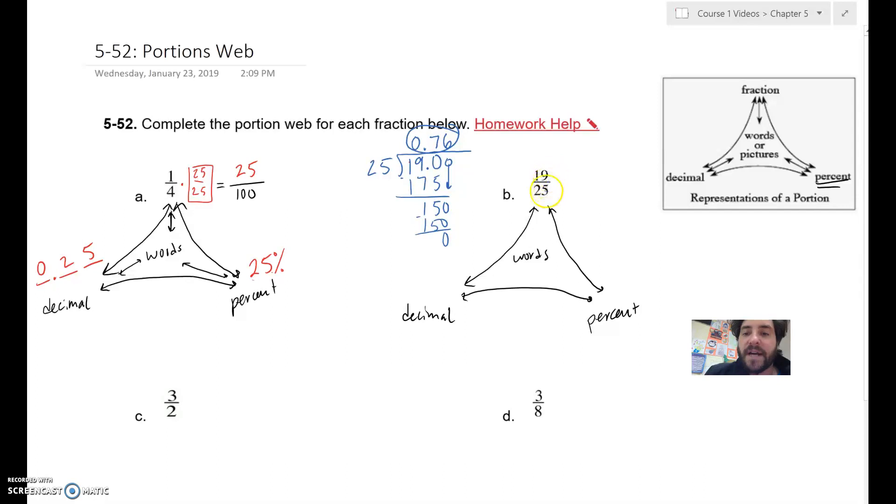That's our decimal right there. So compare that, that doing 19 divided by 25 gets us our decimal of 0.76. And how you would say that is 76 hundredths. So this is equal to 76 hundredths, which is the percent, 76 out of 100, 76 out of 100.